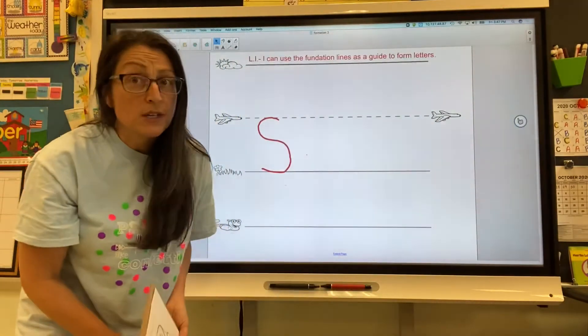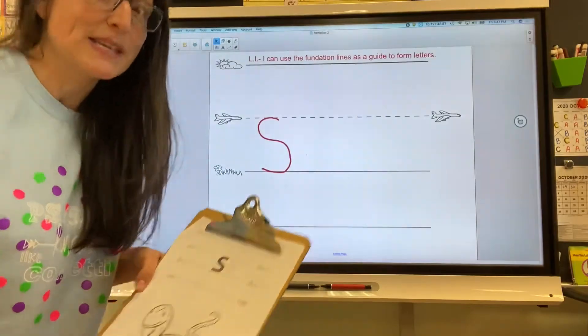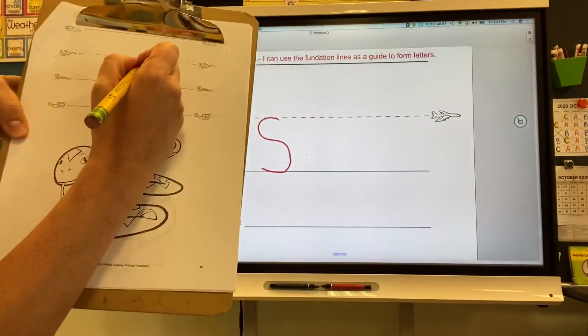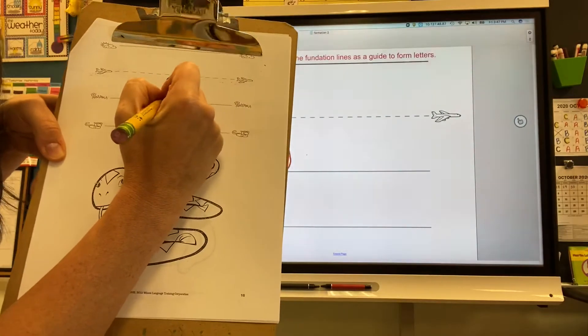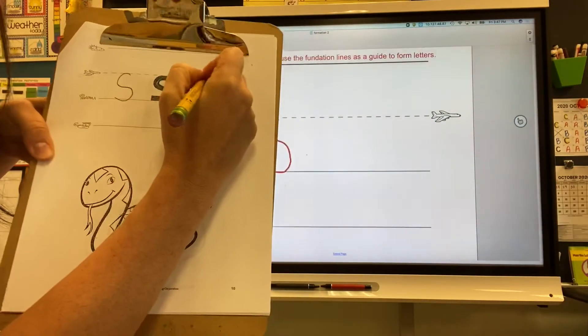This one can be tricky so it takes a lot of practice to be able to write the letter S. Start off by tracing your letter S on your formation sheet then write it and write it.